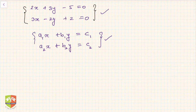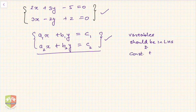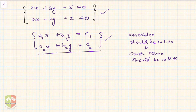Please be careful while applying Cramer's Rule — you must have the equations in the format where variables are on the left-hand side and constant terms are on the right-hand side. The method we are adopting in this session requires variables on the LHS and constant terms on the RHS.